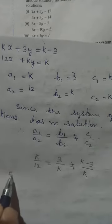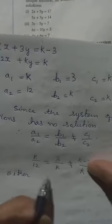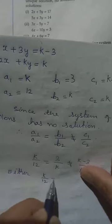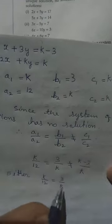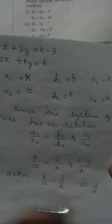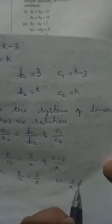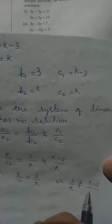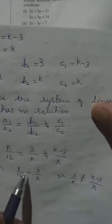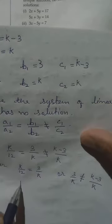Let us spread them out. We can write k/12 equal to 3/k, not equal to (k-3)/k. From the fraction with the equals, we have k/12 equal to 3/k, so k² equals 36.